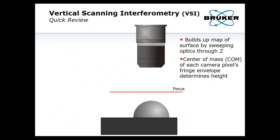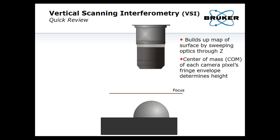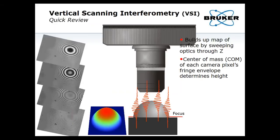How do we make measurements? We sweep the optics through the sample. As your sample traverses the focal plane, you build up a series of images. Those images are combined in the computer to build a 3D surface. As you sweep through the surface, each pixel in the camera will start to modulate, and the center of mass of the modulation envelope is what determines where the pixel is assigned in height. By doing that over the entire detector array, you get the full image built up and a 3D surface.